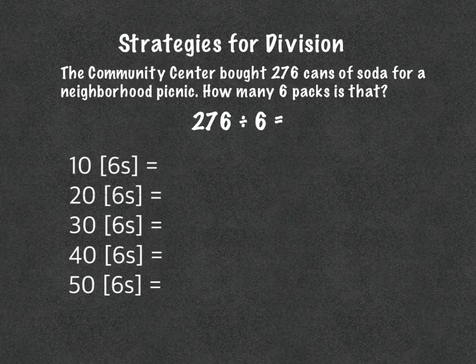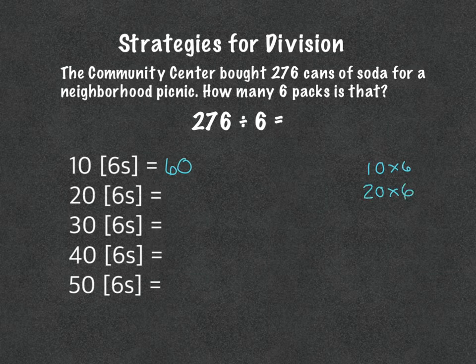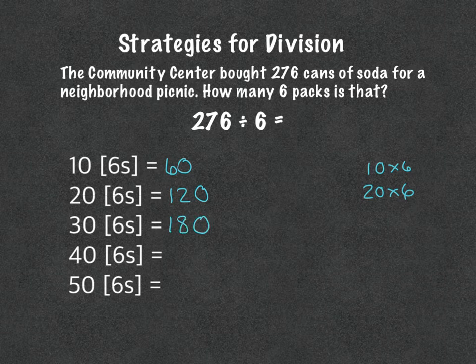One way to do this is to use our knowledge of extended multiplication facts. So 10 sixes — 10 times 6 — is equal to 60. 20 times 6 is equal to 120. 30 times 6 would be 180. 40 times 6 would be 240. 50 times 6 would be 300.